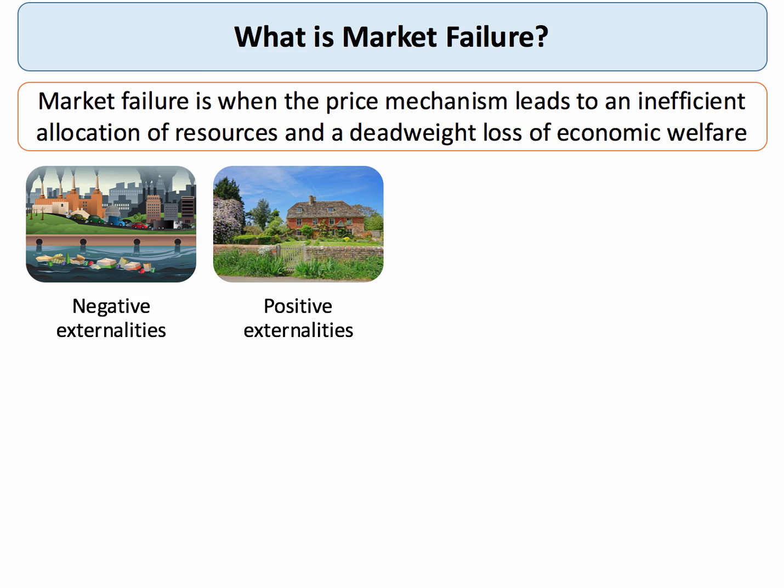The classic example of market failure comes from externalities, both in production and consumption. Negative externalities — for example, pollution from a factory — mean output tends to be over-supplied from society's point of view. With positive externalities, goods and services might be under-consumed, for example the consumption of training, health care, or education.